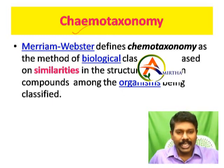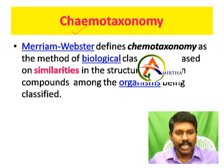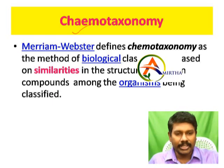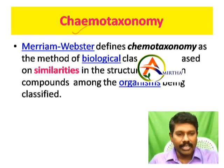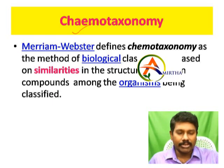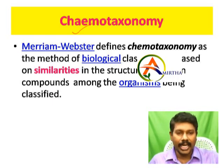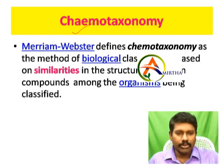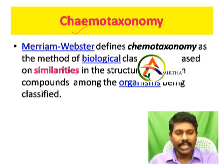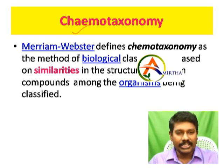To summarize: numerical taxonomy uses numerical values — plus for similarity and minus for difference — for many characters of plants and animals, computerized and assigned values. Cytotaxonomy is based on the organism's chromosome number, structure, and behavior. Hemotaxonomy is based on chemical substances produced in the organism — secondary metabolites, DNA, RNA, nucleic acids, digestive enzymes, end products of digestion, and chemical hormones. Organisms with similar chemicals are classified in the same group. Thank you, see you in the next video.